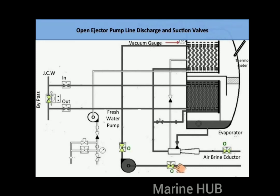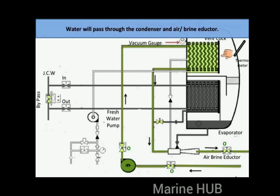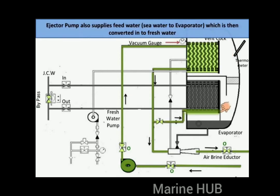Open the ejector pump discharge and suction valves. Open the feed water valve to the fresh water generator evaporator, then start the ejector pump. Water will pass through the condenser and the air brine inductor. The ejector pump also supplies feed water to the evaporator, which is then converted into fresh water.